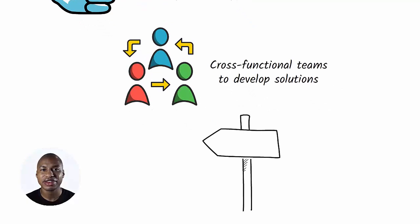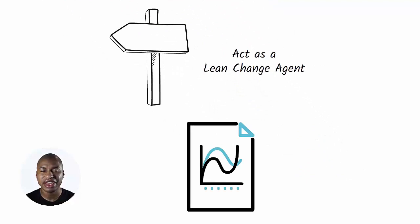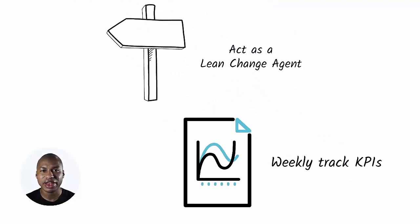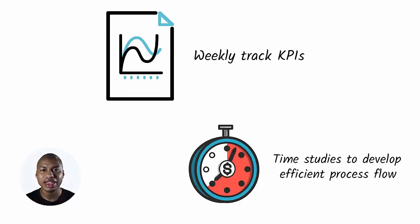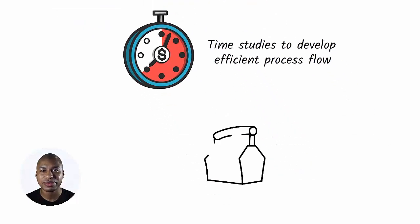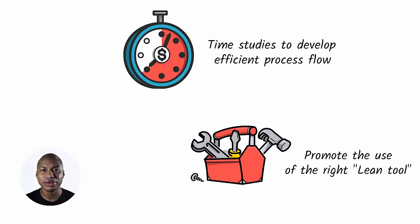Obtaining approval and sponsorship for potential improvement initiatives. Collaborate and communicate with appropriate cross-functional teams to develop solutions. Act as a Lean Change Agent and be able to motivate people to embrace change. Weekly tracking of Key Performance Indicators. Conduct time studies to develop efficient process flow, increase productivity, and balance the manufacturing processes. Promote the use of the right tools — for example, cell design, 5S, TPM, SMED — to reduce waste and increase productivity.